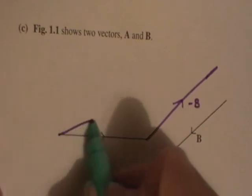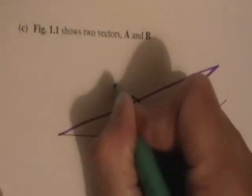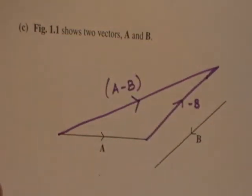...which is from here to here. Again, I should have used a ruler, and there it is: A minus B. That's your resulting vector of those two.